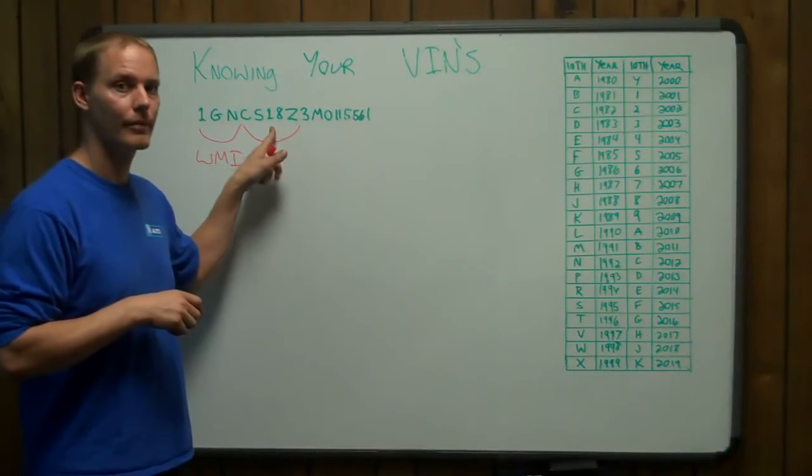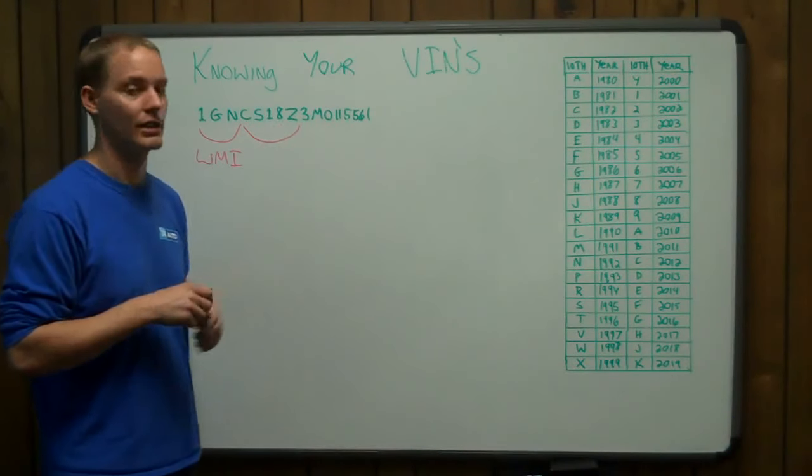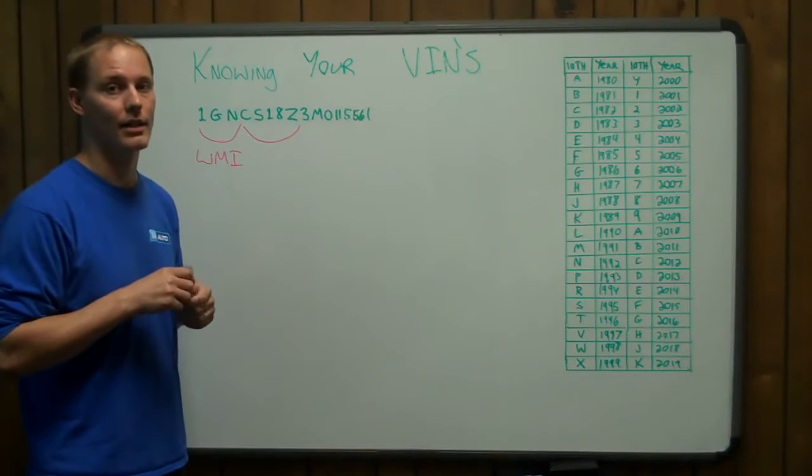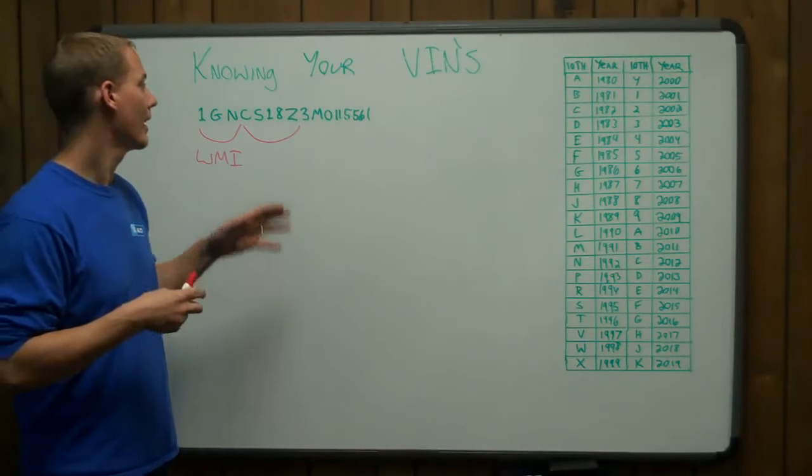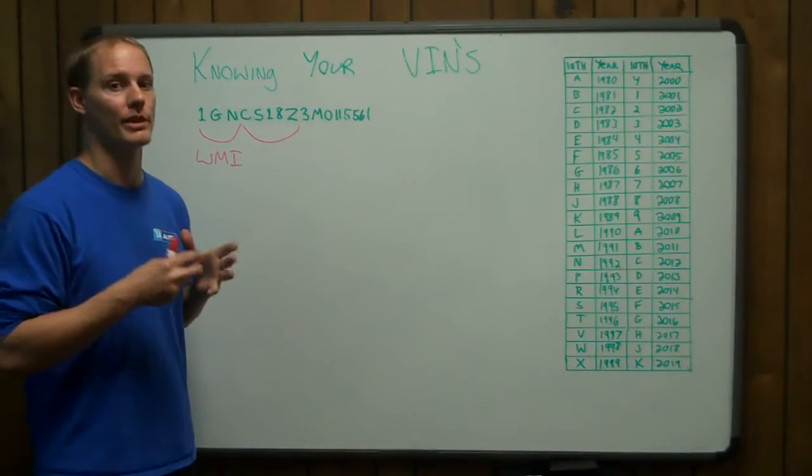The sixth digit, along with the seventh digit, is the body style. So if it was convertible or a two-door or a four-door, whatever that body style is, that is what the sixth and the seventh digit represent.